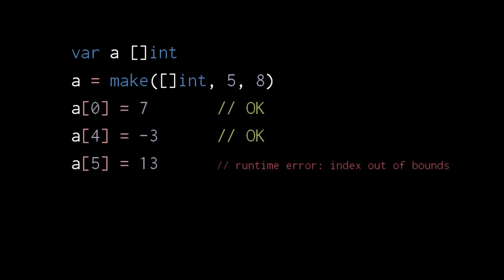Now that we have a non-zero length slice, we can use it like an array. However, even though the array pointed to in the slice has an actual capacity of 8, the slice only has a length of 5, and so indexes 5 and above are considered out of bounds.